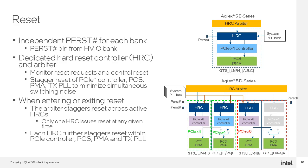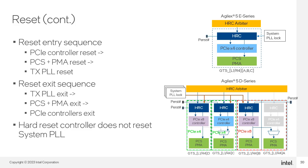The overall idea is the same; the difference being that if two banks are combined to configure by-8 PCIe, the hard reset controller operation will come from the transceiver bank that contains the by-8 controller. During reset entry, the sequence is: PCIe controller reset, then PCS and PMA reset, then TX-PLL reset. During reset exit, the sequence is: TX-PLL exit, then PCS and PMA exit, then PCIe controller exit. Note that the hard reset controller does not reset the system PLL.